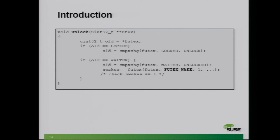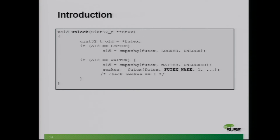This is exactly what the unlock function does. In the fast path, if there are no waiters, it'll just exchange the locked value to unlocked and be done. If there are waiters, then you have to exchange it back to unlocked from the waiter count and then call into the Futex for the wake up.